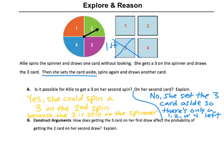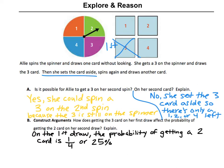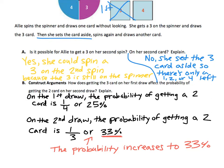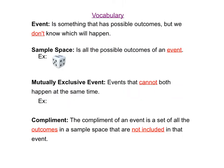How does getting the 3 card on her first draw affect the probability of getting the 2 card on her second draw? On the first draw, the probability of getting a 2 card would be 1 out of 4 because there are 4 cards and one of them is a 2. But on her second draw, since she removed the 3 card, the probability of getting a 2 would be 1 out of 3 — because there's 1 two-card and 3 cards left. So that's 33%. The probability actually increases to 33%, whereas it would have been 25% on the first draw.